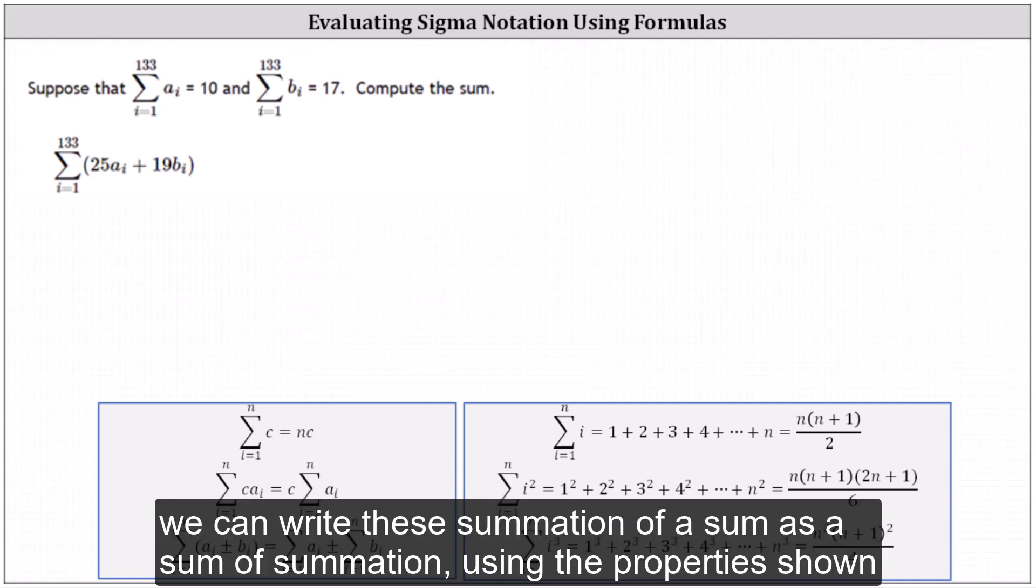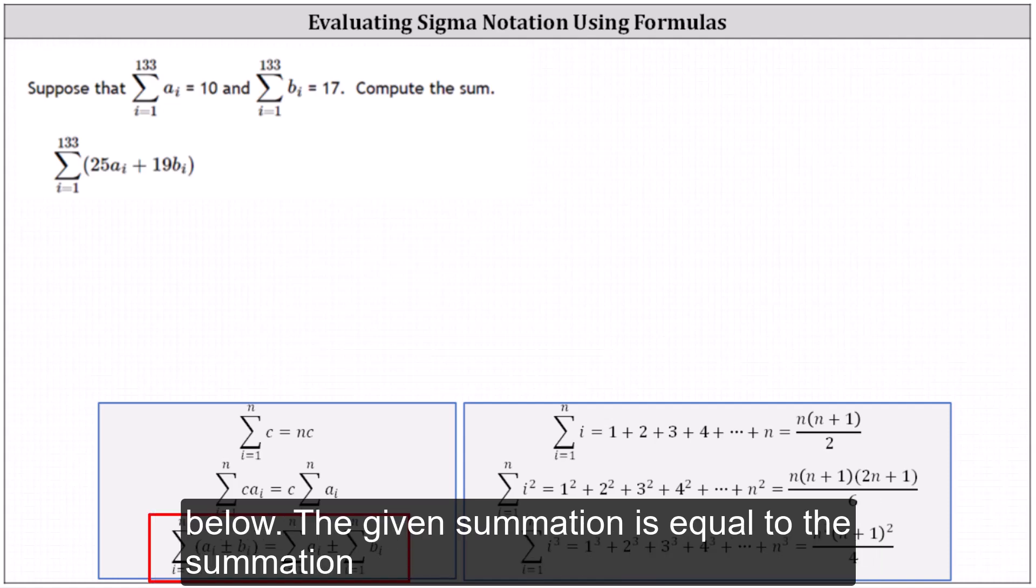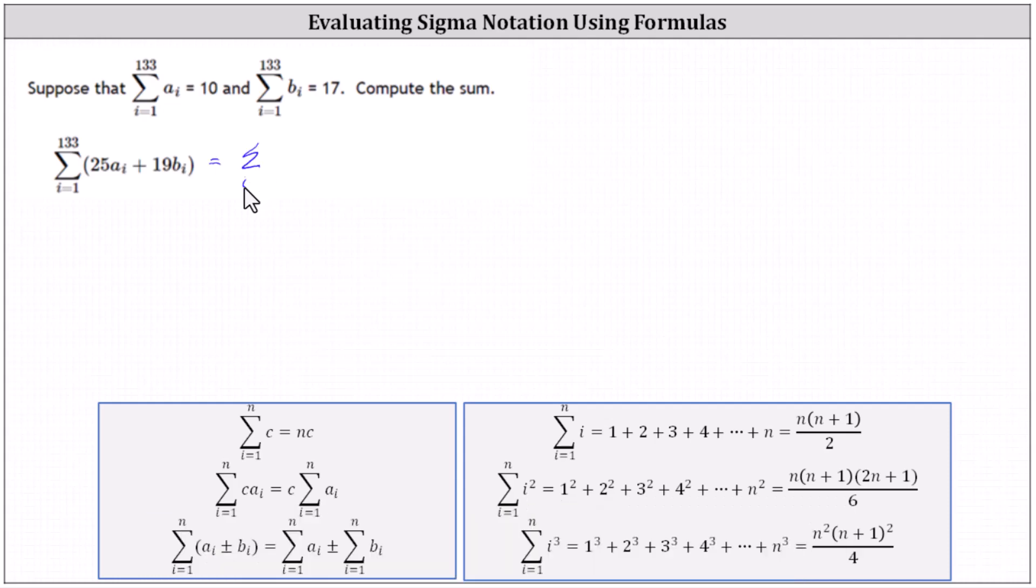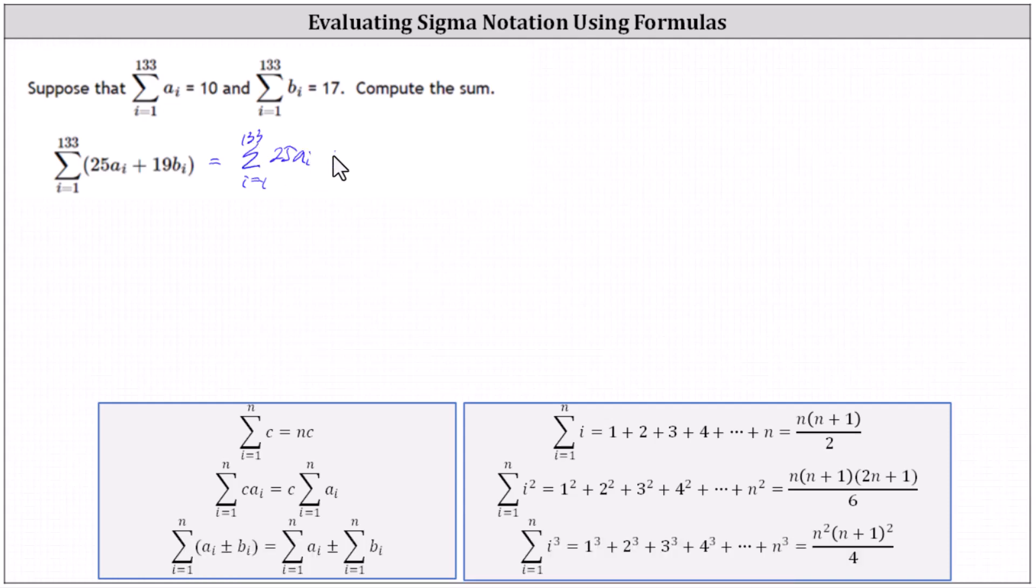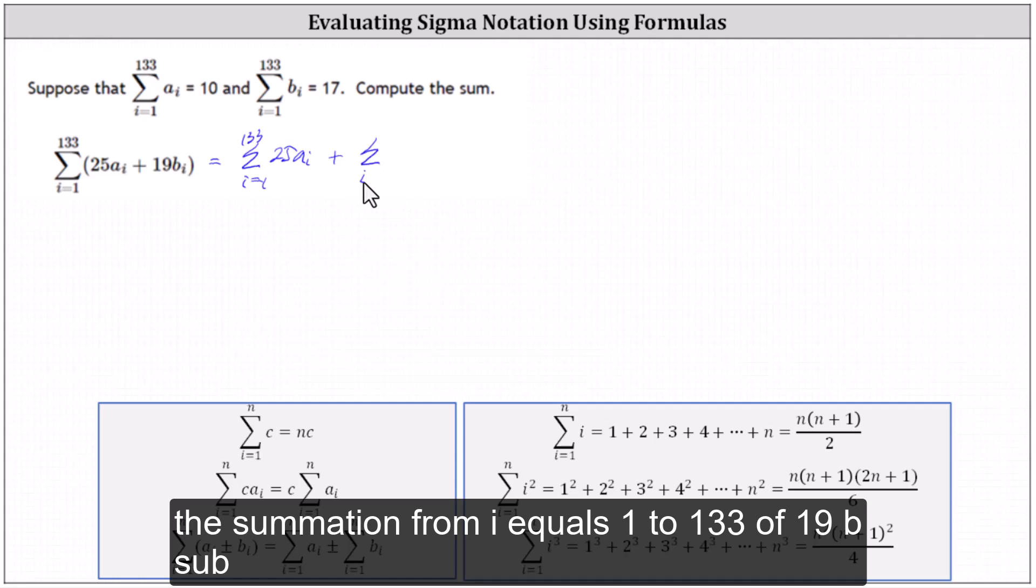To begin, we can write the summation of a sum as a sum of summations using the property shown below. The given summation is equal to the summation from i equals 1 to 133 of 25 a sub i plus the summation from i equals 1 to 133 of 19 b sub i.